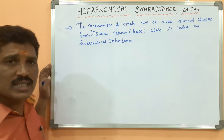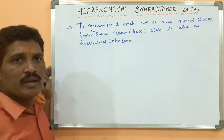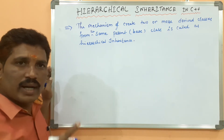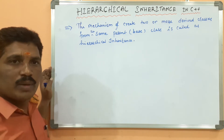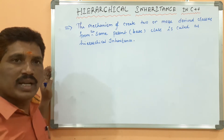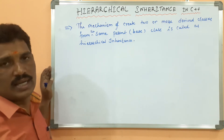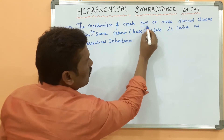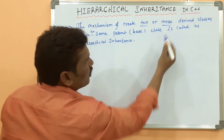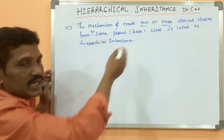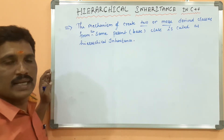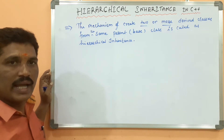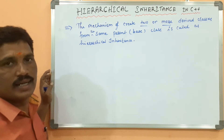The parent class is only one. You can derive any number of derived classes from it. Having two or more derived classes from the same parent class is the concept of hierarchical inheritance.